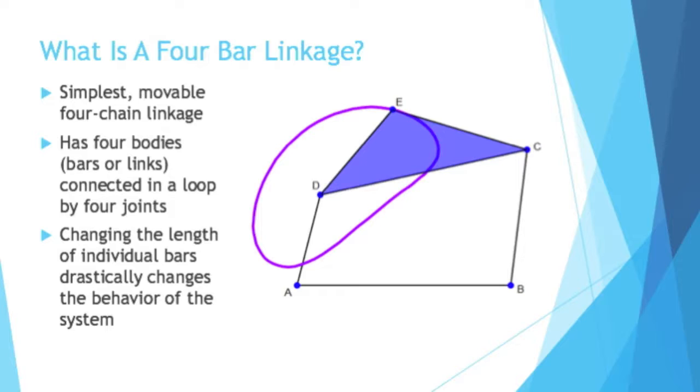By making the D to C bar a triangle, you can get some interesting properties. See point E? That circle, the circular shape drawn, represents the movement that point E goes through as the four-bar linkage is activated, so it traces a very interesting moving path.